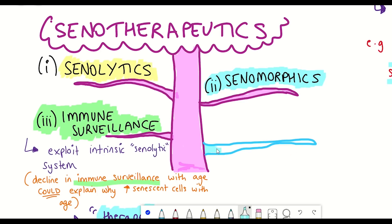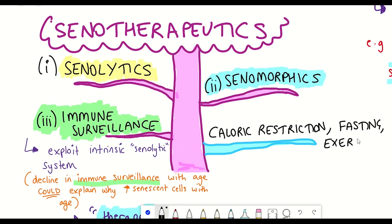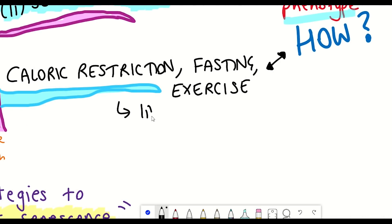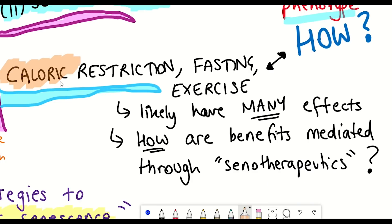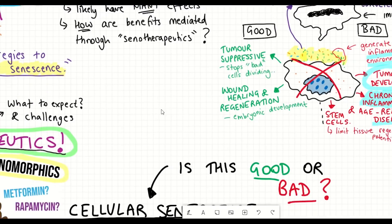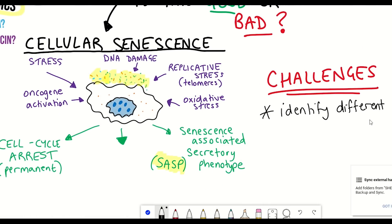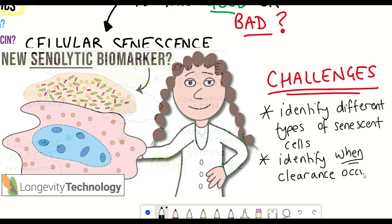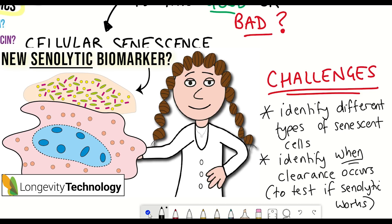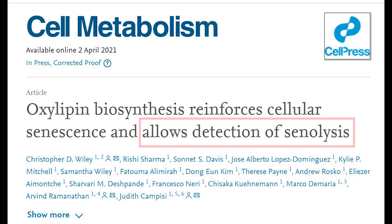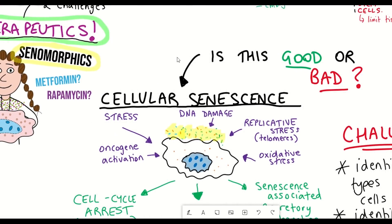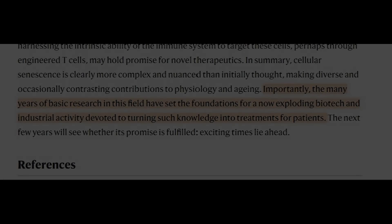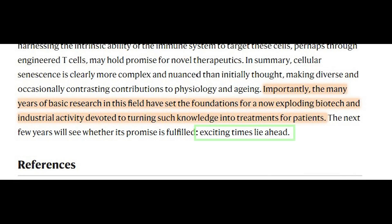Other interventions such as caloric restriction, fasting, and exercise could also impact senescent cell clearance or reduce the SASP. However, how these interventions impact the number or activity of senescent cells has not been meticulously studied, partly due to continued limitations in defining senescent cells and identifying when they're removed from the body. Recent research has identified enoxylipin as a potential strategy to identify senescent cell clearance, which could help further understanding. There are definitely challenges to senotherapeutics — particularly ensuring it is both safe and effective — but as one review article puts it, the next few years will see whether its promise is fulfilled.